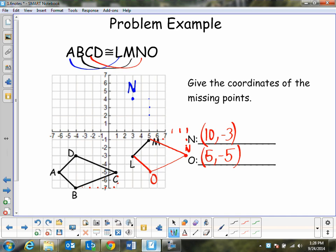So there's N. And then O is somewhere over here in this area. So we go over 5, 1, 2, 3, 4, 5, down 1, 2. So here's O.